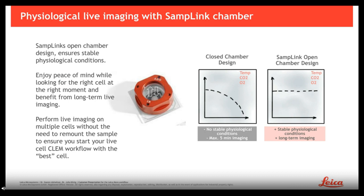Long-term imaging is very important for two reasons. First, you need to ensure that the cell you selected shows the phenotype you are actually interested in, and to judge that, you need to image the cell for a certain amount of time. Second, if you want to target a specific process during a dynamic event — for example, mitosis, which takes minutes to hours depending on the stage — you need to follow this process from the beginning. Otherwise, you can never be sure that you really catch the concrete moment of interest.